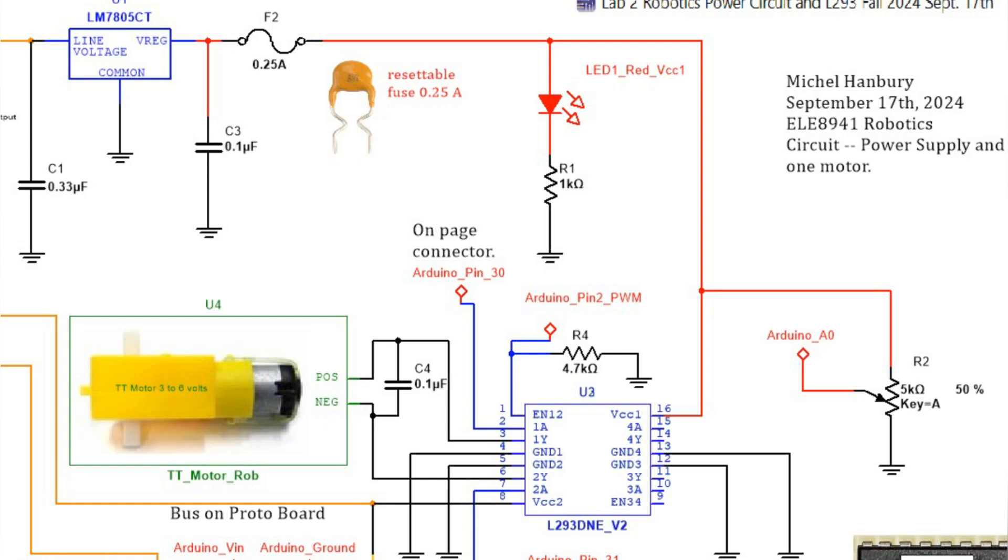And you'll notice that pins 3 and 6 go to the motor. Pin number one is the enable signal, and then 1a and 2a control the direction, and they both must be at different levels for the motor to turn.